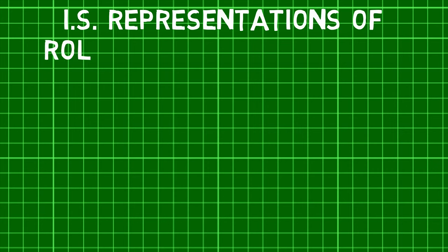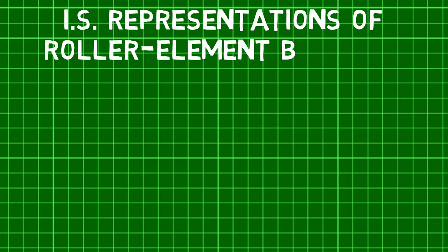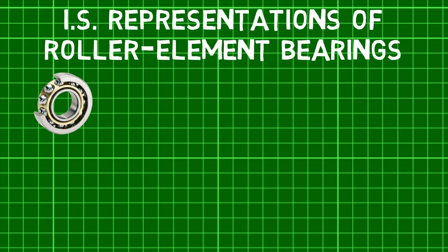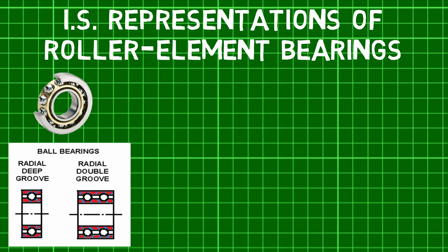Now there are three main representations of roller element bearings. First is the representation of ball bearings. Balls in the rolling elements are represented by the use of a circle between the races.